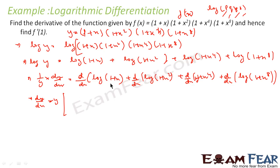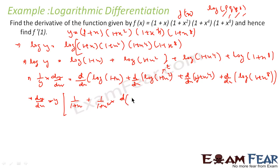Taking d/dx of log(1+x): this is 1/(1+x) times d/dx of (1+x), which is just 1. For d/dx of log(1+x²): assume (1+x²) as t, so this becomes (1/t) · dt/dx, that is 1/(1+x²) times d(1+x²)/dx. Similarly for d/dx of log(1+x⁴): assume (1+x⁴) as t, giving 1/(1+x⁴) times d(1+x⁴)/dx.